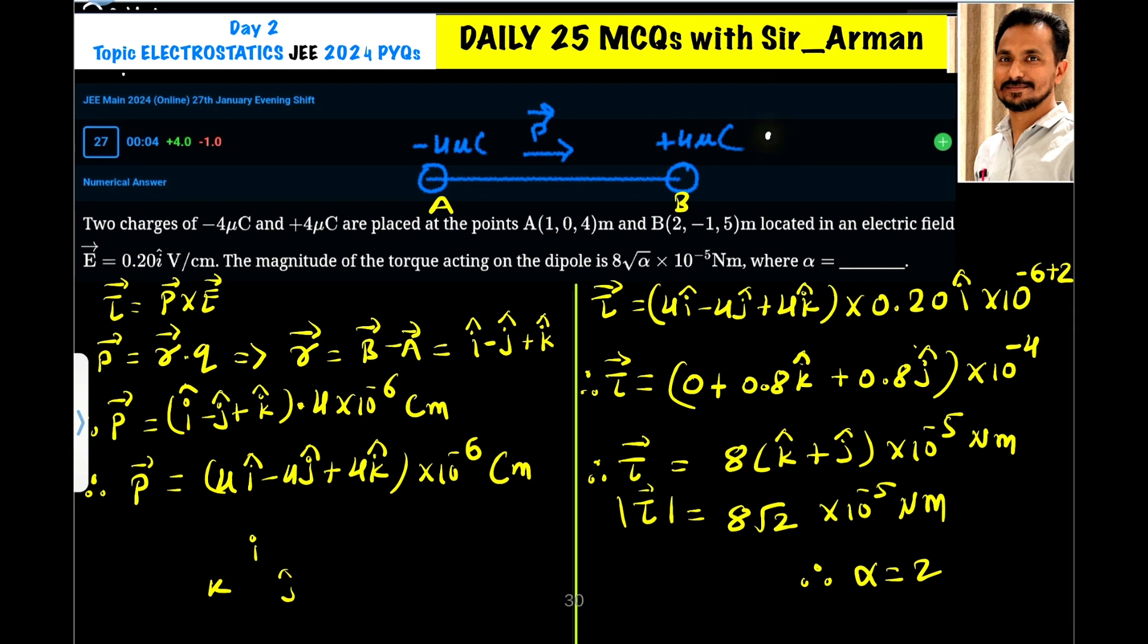Now to find R, we will subtract A from B, that is B minus A. Why B minus A? Because the direction of the dipole moment is from negative charge to positive charge, that is it is going from A to B, so our final position is B and initial is A. How to find displacement? It is final position minus initial position, so the same technique we are using here.